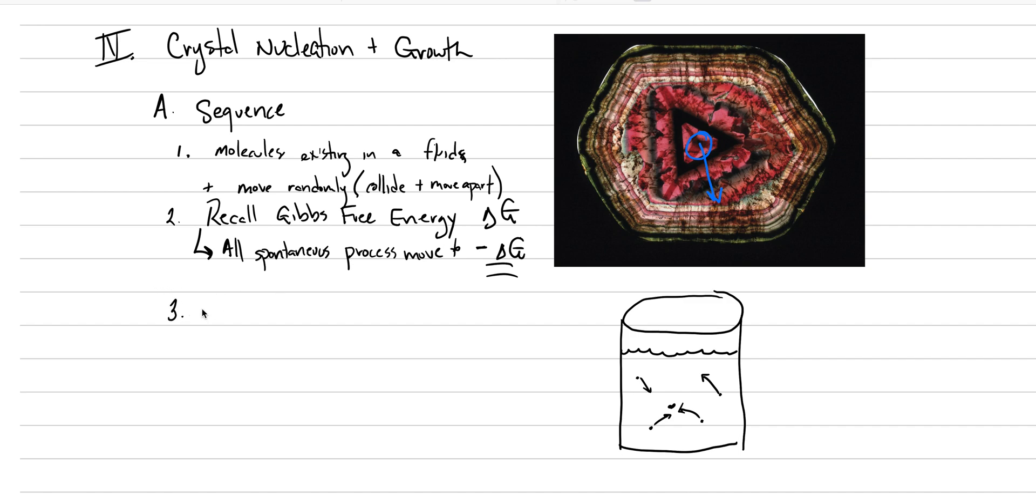And clustering is the process that's going to allow that. So let's go number three here. We're going to say that small clusters have very many unsatisfied bonds. So if you can imagine, here's our two little clusters.